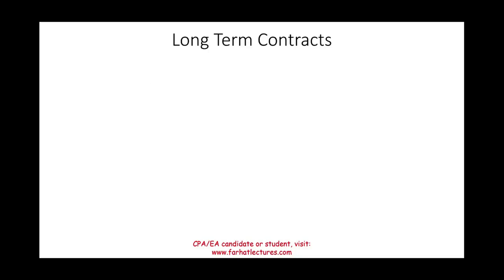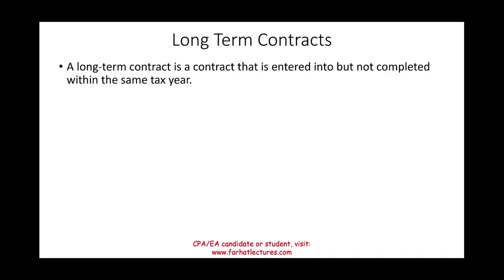Welcome to this session on the taxation of long-term contracts. A long-term contract is one that is entered into but not completed within the same tax year. Using a calendar tax year example, if we enter into a contract in year one but do not complete it until year two — spanning January through December — that qualifies as a long-term contract.